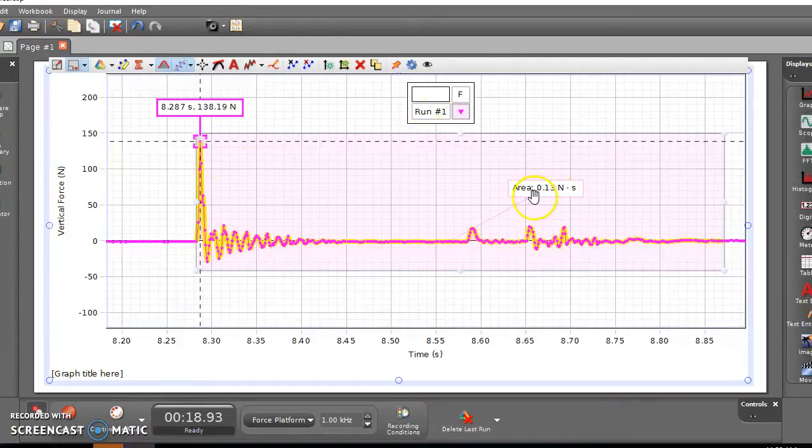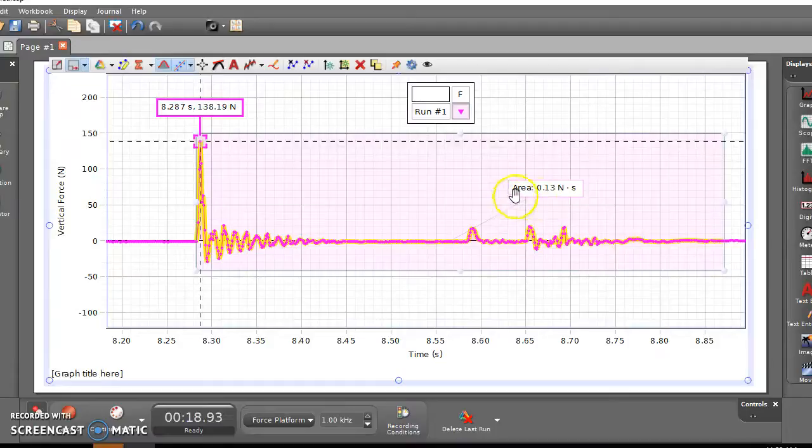You can use that to figure out how fast it was going, potentially how high it was dropped from, and things like that. And once you've done this, once you get the data itself, you can disconnect and let the next group go, and take this back to your table to analyze it.